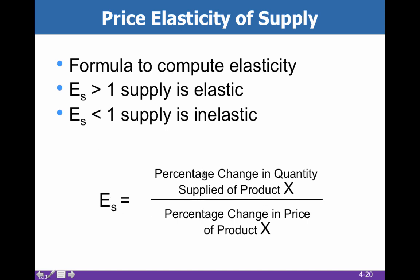Our formula is pretty much exactly the same as we learned with elasticity of demand — it's stuff over money. The percentage change in price of the product is in the denominator, and percentage change in quantity of the product is in the numerator. Everywhere that we saw a 'd' we put an 's', and everywhere that we saw quantity demanded, we put quantity supplied.